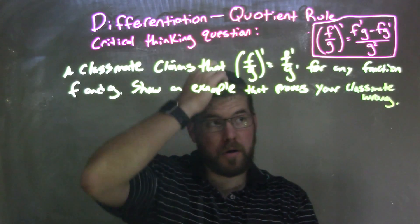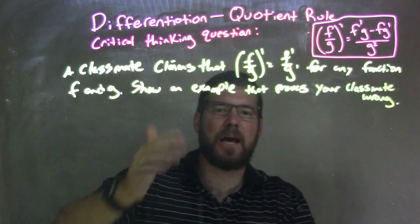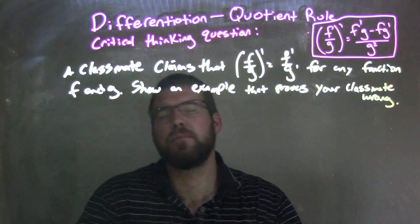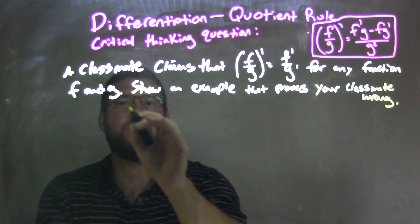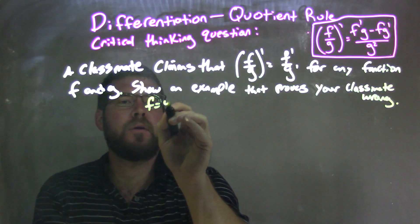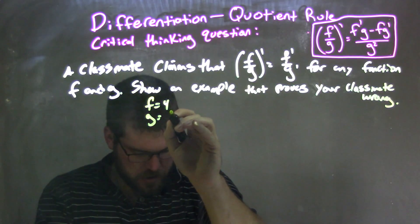We're going to prove our classmate's wrong. We're showing just basically one example where they're wrong. Let's find one example where it could be wrong. So if I have f to be 4, let's pick f to be 4, and g to be 2x.